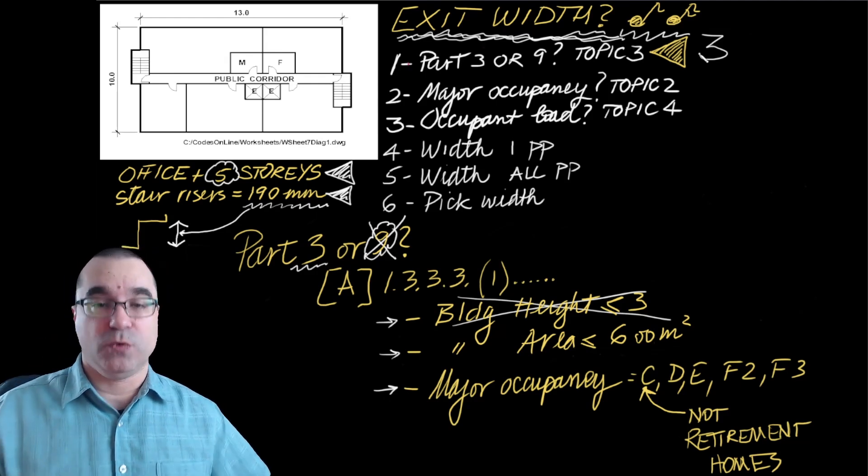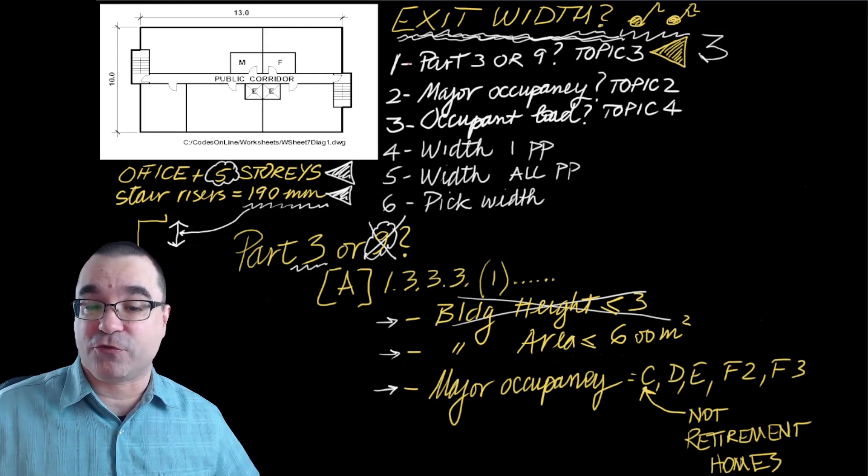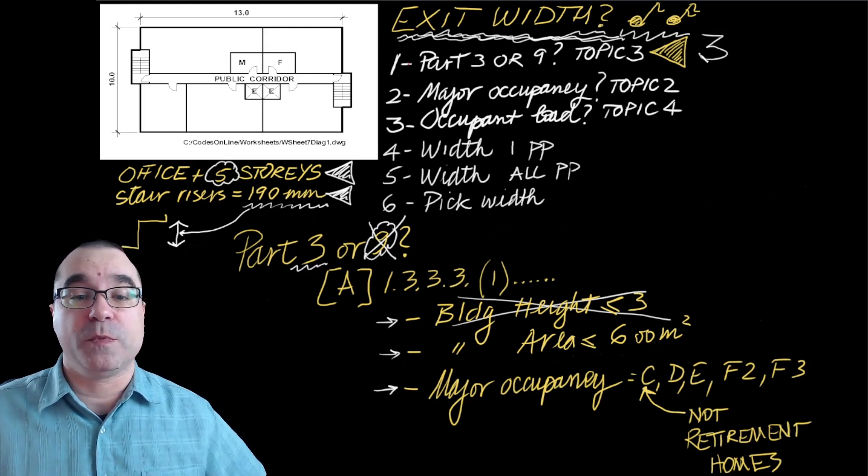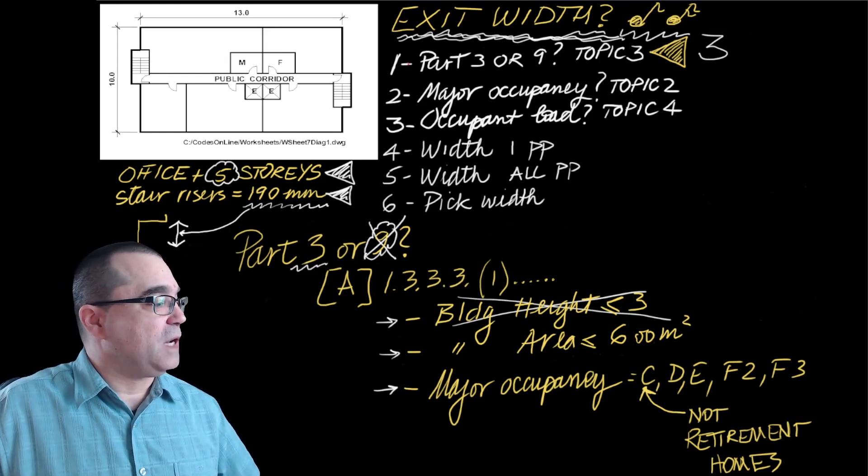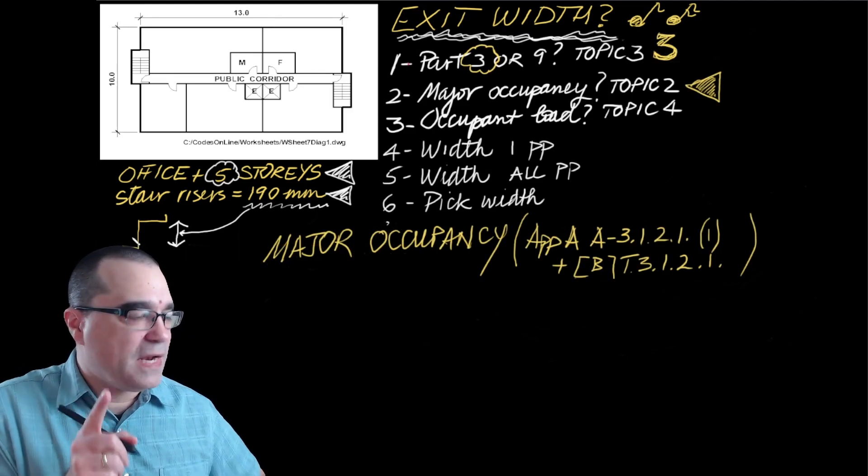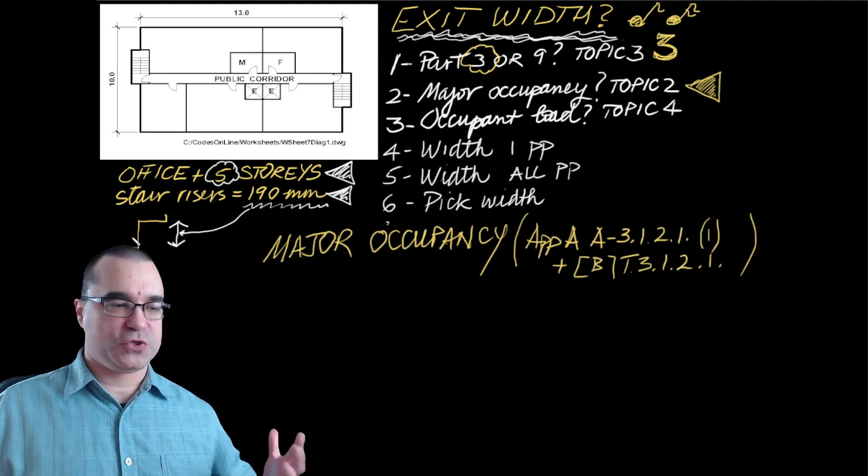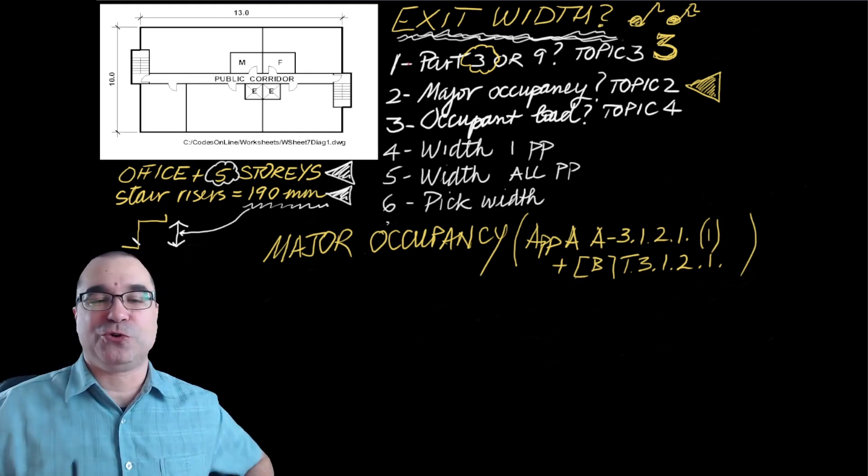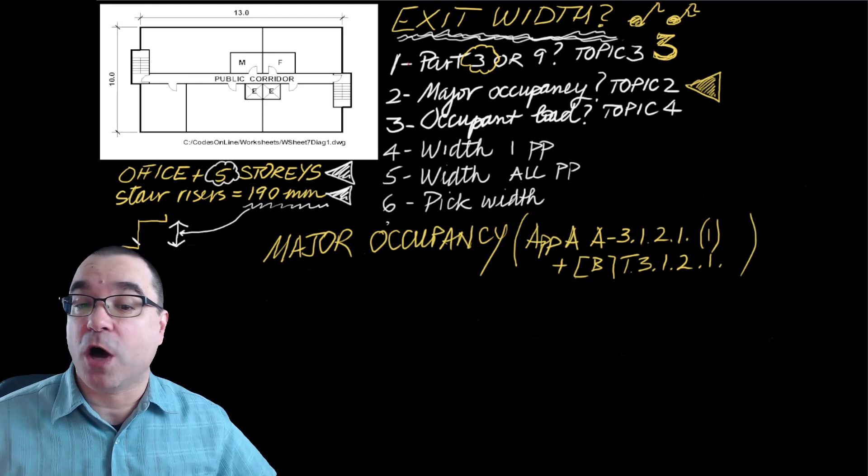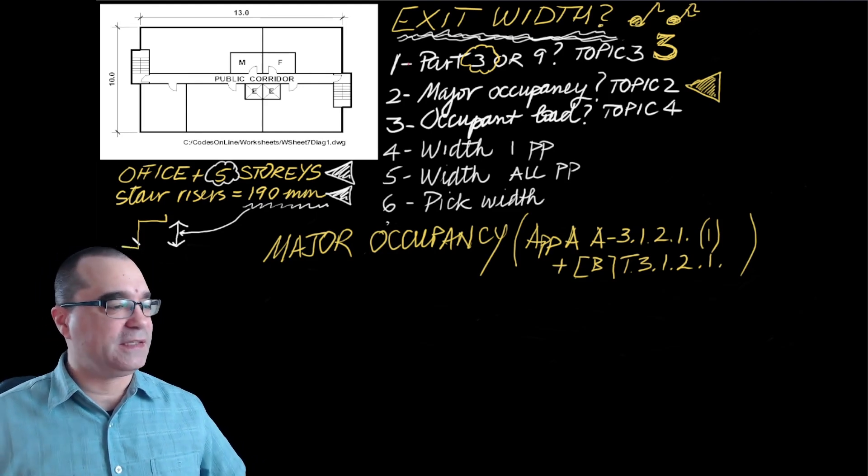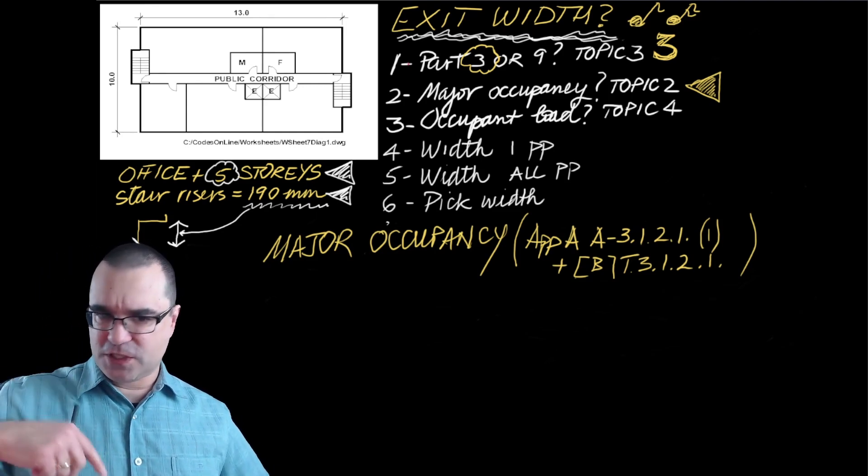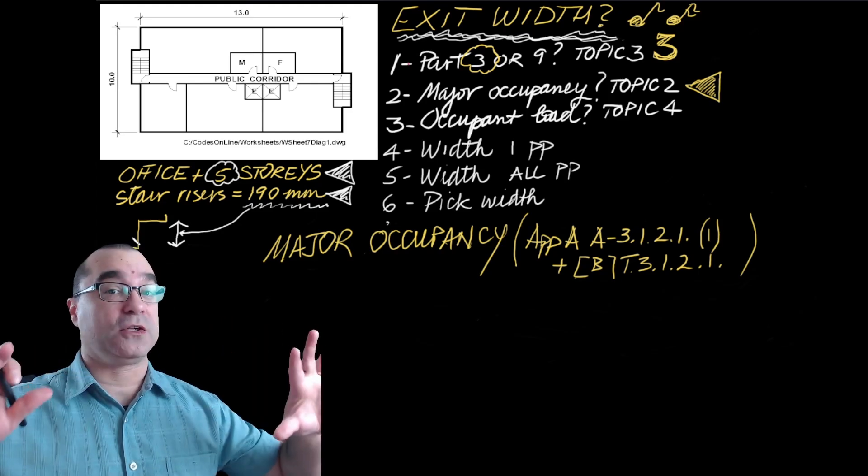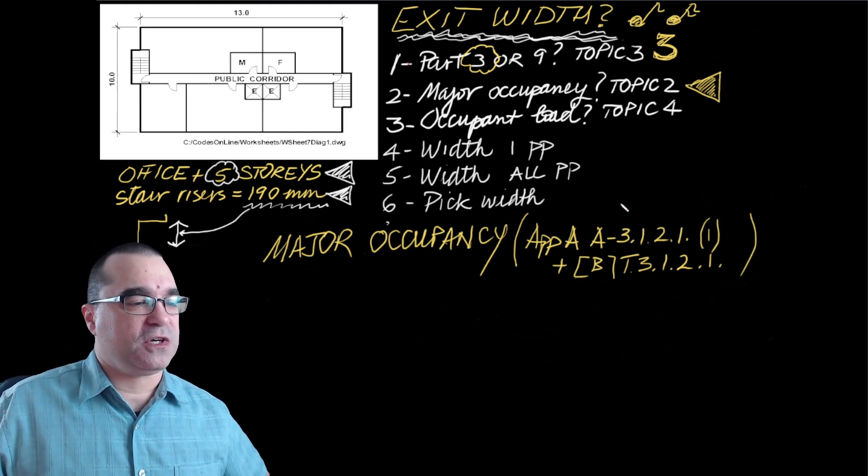Now that we know this, we know that we're going to get all of our information from Part 3 of the Ontario Building Code. We can move on to step number two. For step number two, what we have to try to figure out is the major occupancy for this building, or at least for this floor space, which is based on Topic 2. We get that information for this course because it's an introductory course.